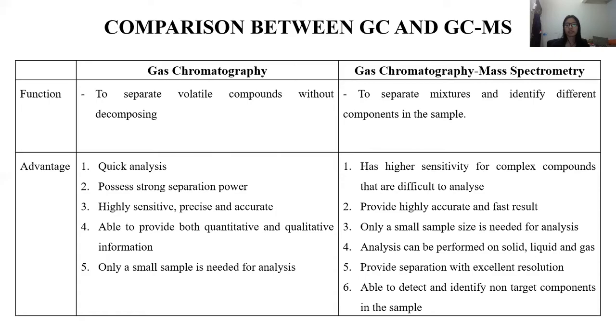In terms of the advantage, it actually has similar advantages. But GC-MS has higher sensitivity than GC itself for complex compounds that are difficult to analyze. And also the major difference is that GC-MS can detect and identify non-target components. This is something that GC cannot do.